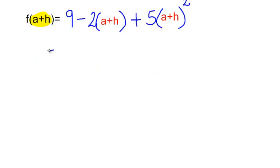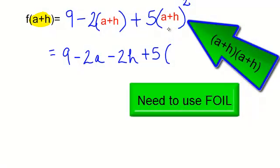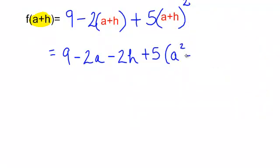Now, I will need to do a lot of distributive property here. Multiplying negative 2 times that parentheses will give me negative 2a minus 2h plus 5 and a plus h in parentheses squared. You will need to use FOIL. That is a plus h times a plus h. That will be a squared plus 2ah plus h squared.